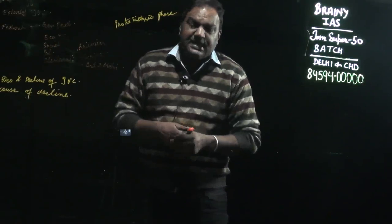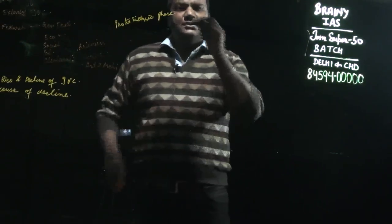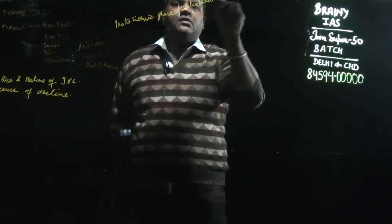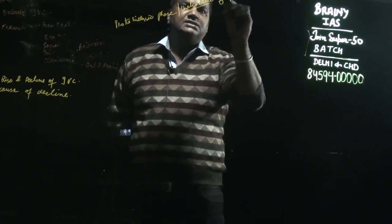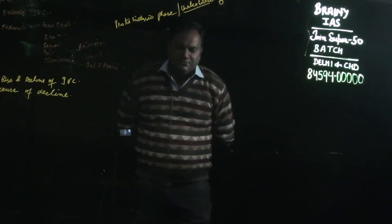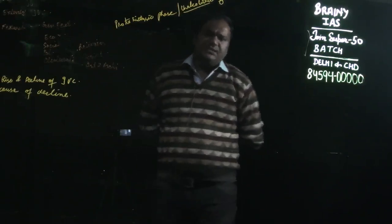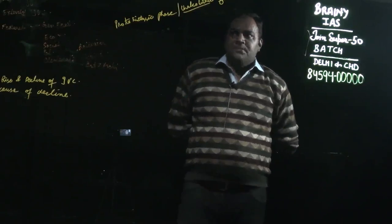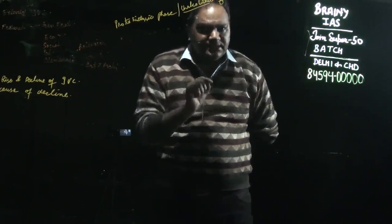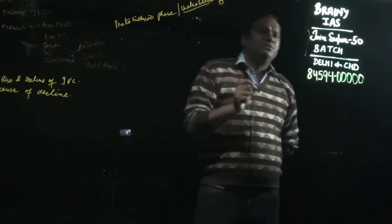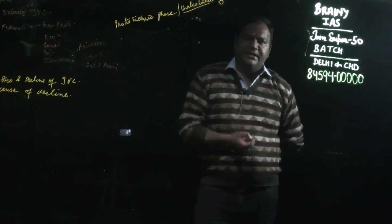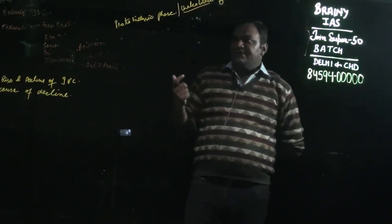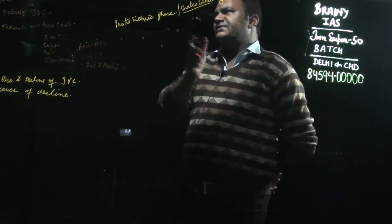We can also place the Indus Valley Civilization in the Chalcolithic age. The Chalcolithic age is an age in which tools, implements, and everything were made out of copper. In the proto-historic phase, they knew the art of metallurgy, and we have seen that they had bronze — an alloy of copper and tin — hence we can consider that they are part of the Chalcolithic phase.